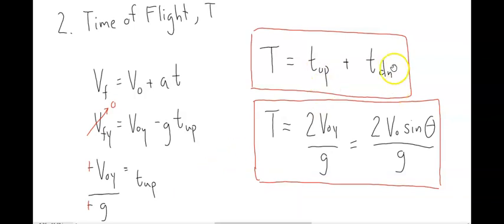So, t up plus t down equals the full time of flight. The full time of flight can be abbreviated as two voy, since you're doubling this, two voy over g, which is two v0 sine theta divided by gravity.